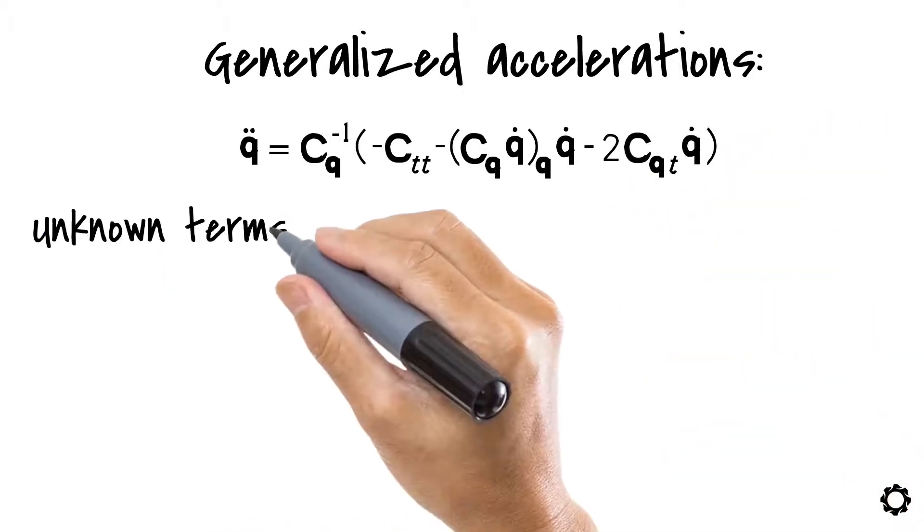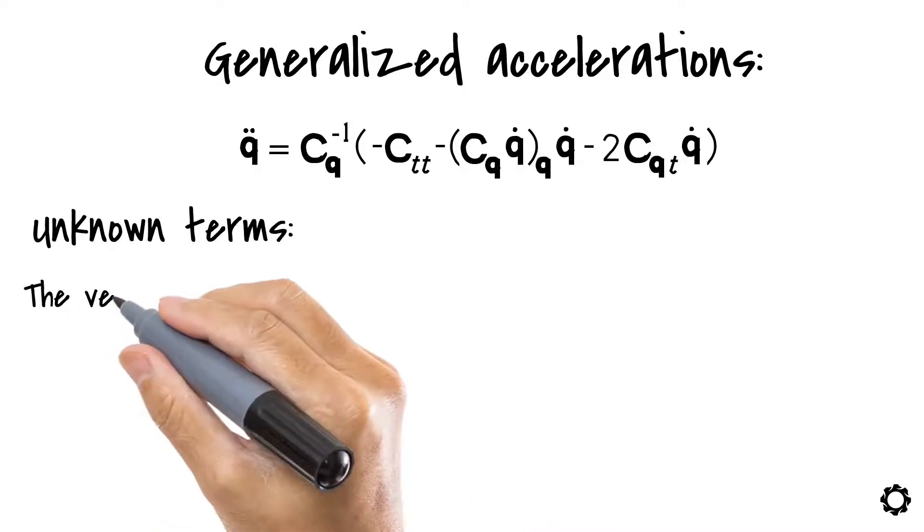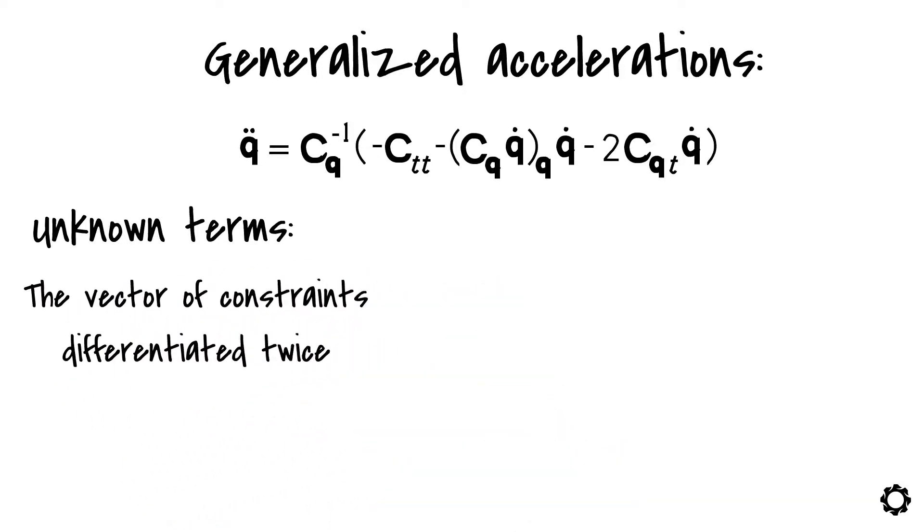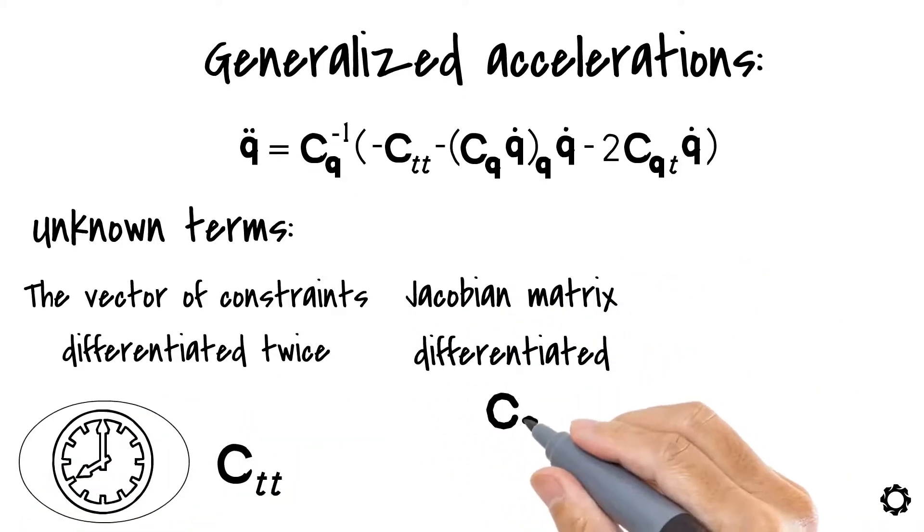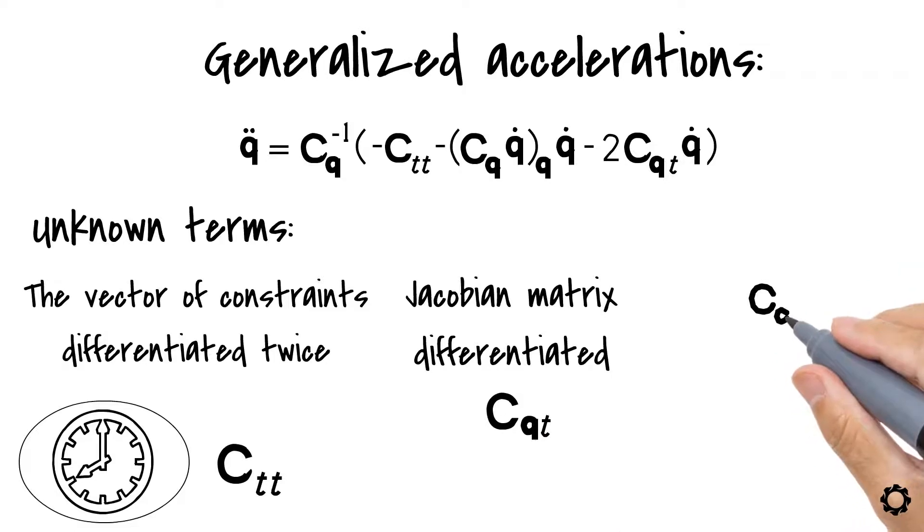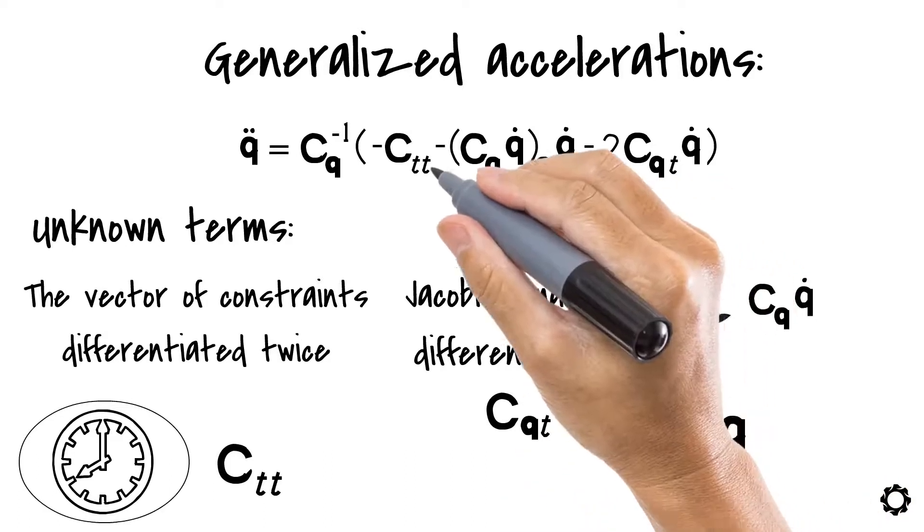The unknown terms are: the vector of constraints differentiated twice with respect to time, ctt; the Jacobian matrix differentiated with respect to time, cqt; and the product cq times q dot differentiated with respect to the generalized coordinates, which is written as cq times q dot q.